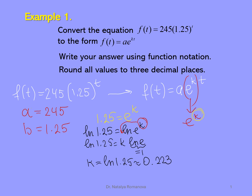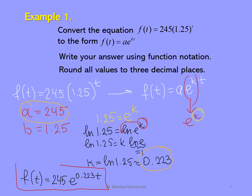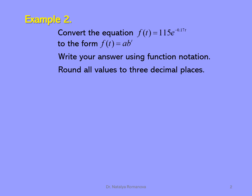Now we have initial value a and we have k. We can convert our given function to the continuous exponential growth form. It would be f of t equals 245 times e to the power of 0.223t. This is the answer for this example — the continuous growth form of our given function.